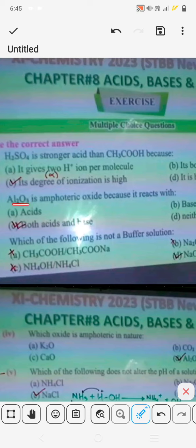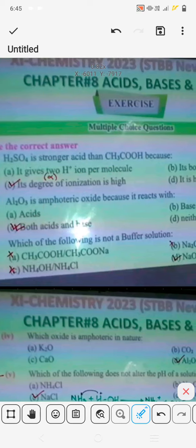This is an amphoteric oxide because it reacts with both acid and base. Amphoteric oxides include aluminum and zinc containing compounds.